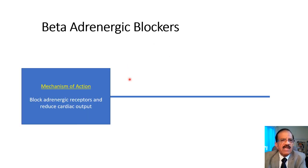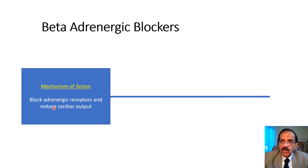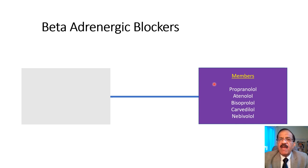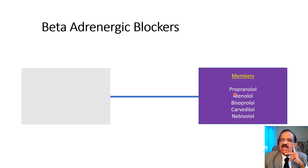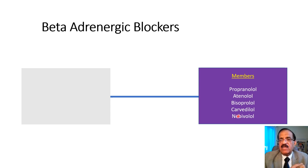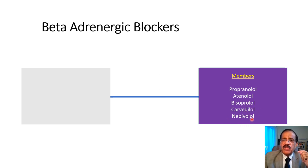Beta-adrenergic blockers work by blocking adrenergic receptors and reducing cardiac output. Members include propranolol — the oldest non-selective beta blocker that works on heart and bronchi and can cause bronchospasm — atenolol, which is relatively cardioselective, bisoprolol, which is further cardioselective, carvedilol, which is an alpha blocker as well as a non-selective beta blocker, and the latest nebivolol, which is a cardioselective beta blocker with additional alpha-blocking and vasodilating properties. These are very cheap and very useful drugs.